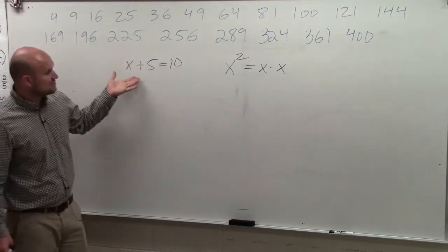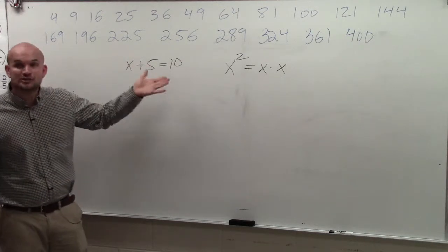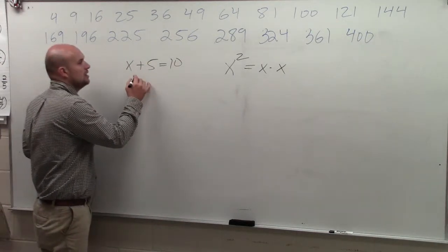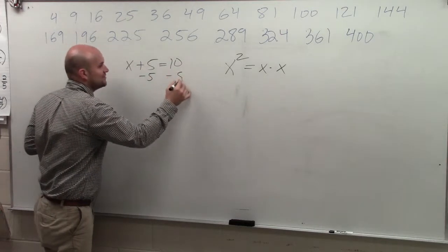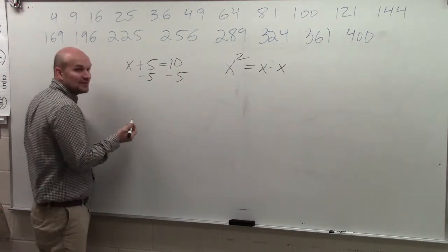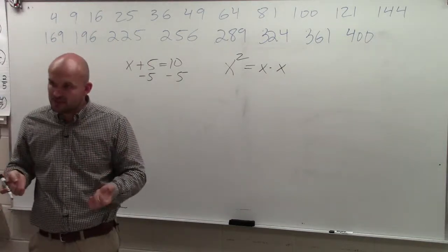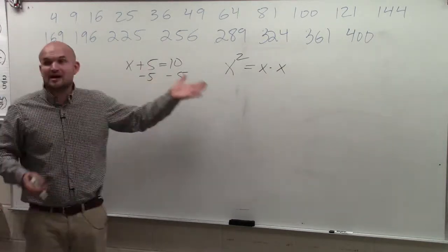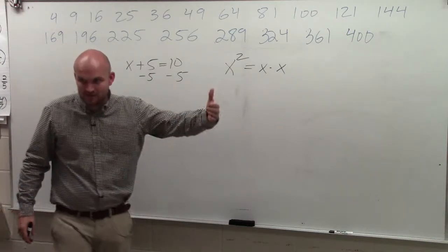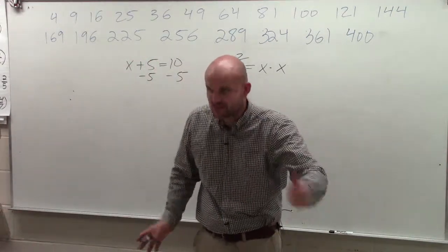So if I have the equation x plus 5 equals 10, and I want to undo adding, I'm going to have to subtract. Right? Undo addition is subtraction. They're what we call inverse operations. If I had x minus 5 equals 10, I would have to add 5. Right? Because adding would be the inverse operation of subtracting.